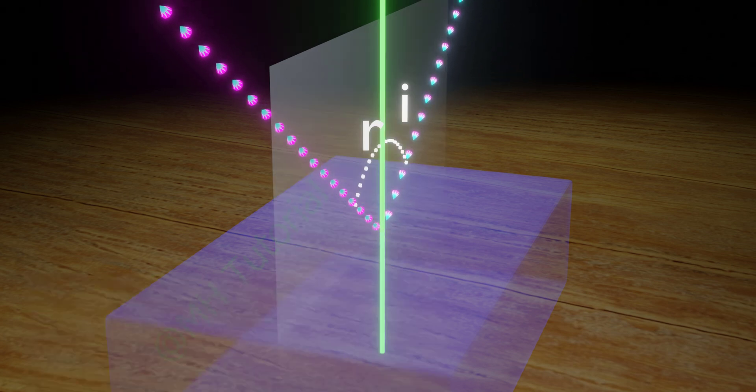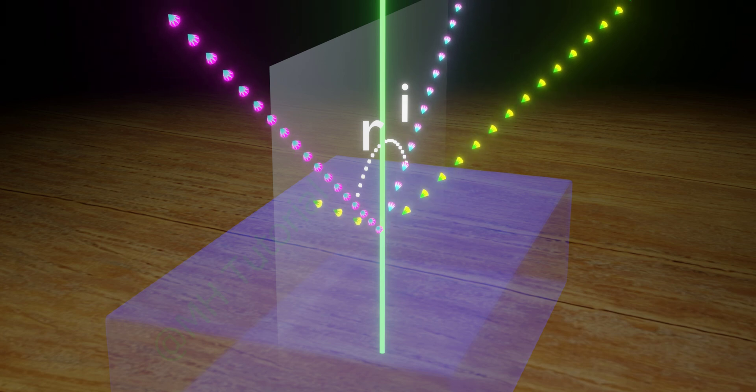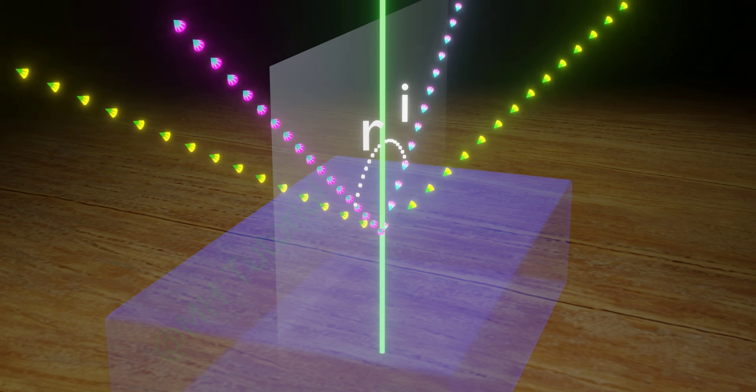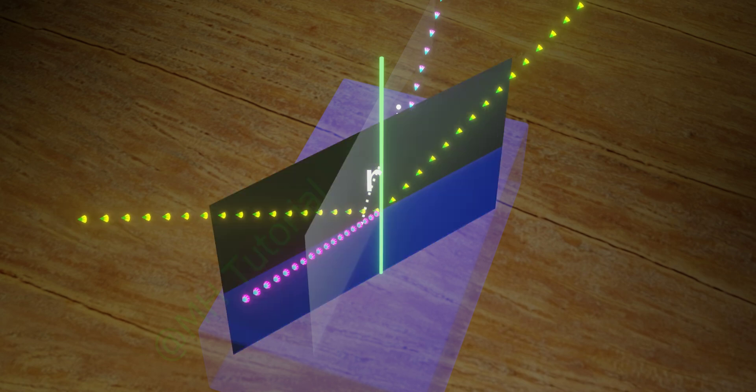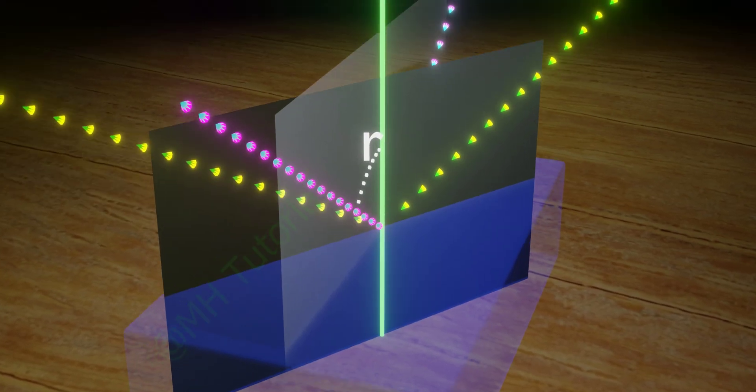Suppose another ray of light travels to that point from a different direction. Then incident ray, normal, and reflected ray may not lie on the previous plane. They may be placed on another plane.